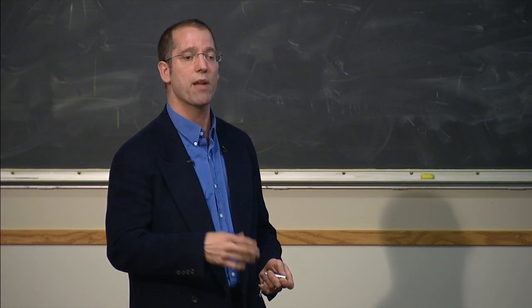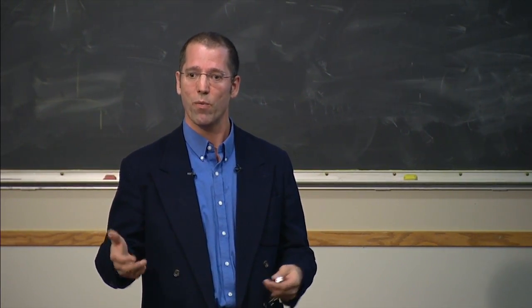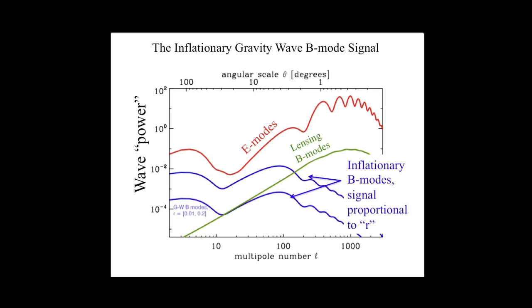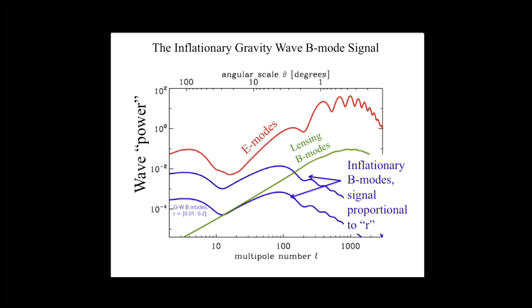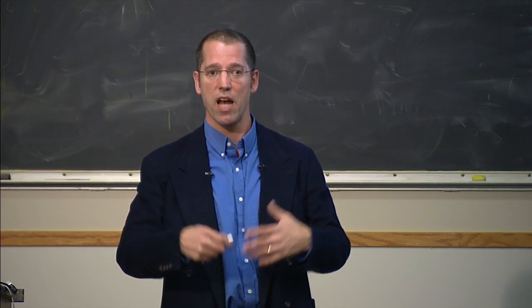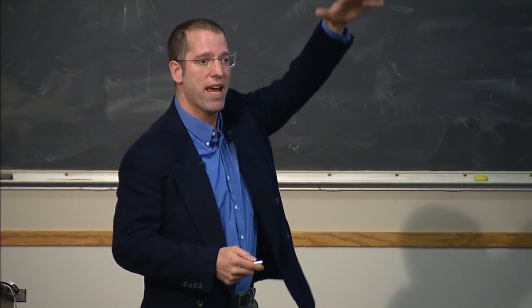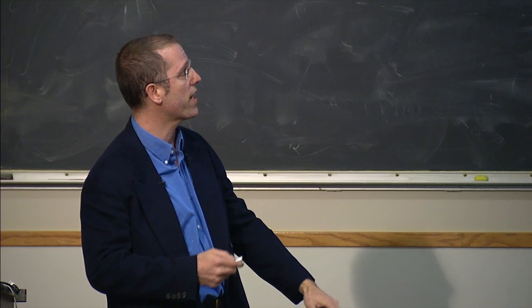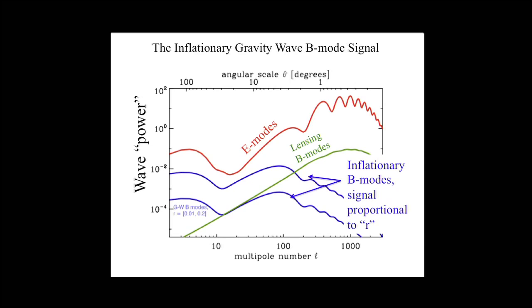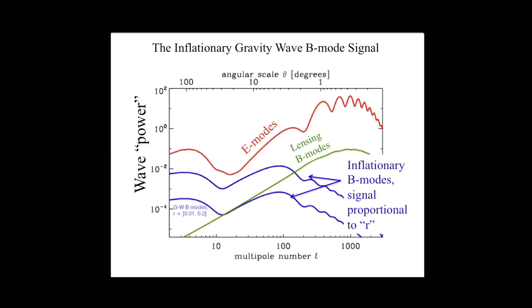This is a very, very difficult measurement, and everyone in the field really believes we need confirmation. Going back to the power spectrum plot: we'd like to see the signal on the blue line. Two curves are drawn because we didn't really know — and it depends on the model of inflation — how many gravity waves would be created. More gravity waves means a stronger signal. We parameterize this by a number called r. Here's a curve for r = 0.01 and one for r = 0.2. More r means more gravity waves, a bigger signal, and easier to see.